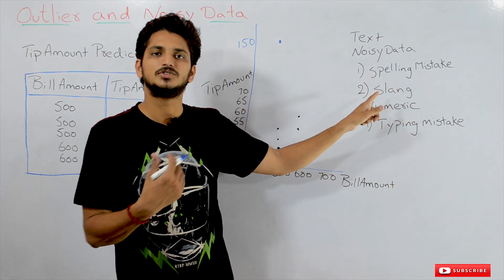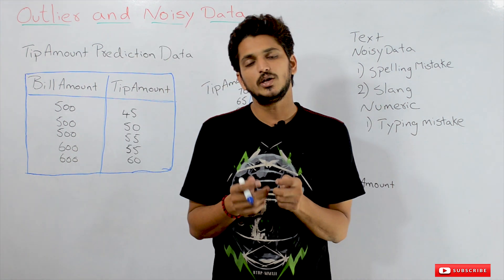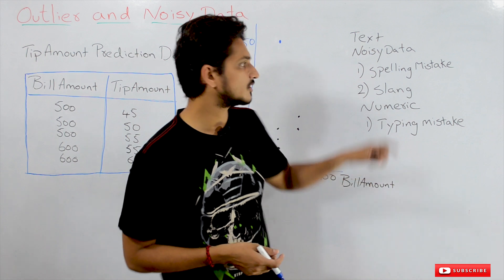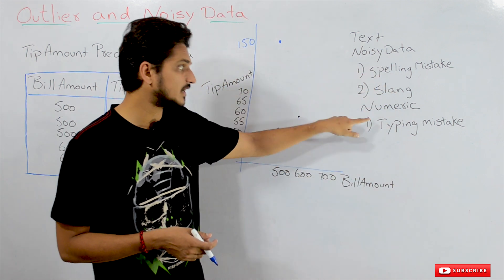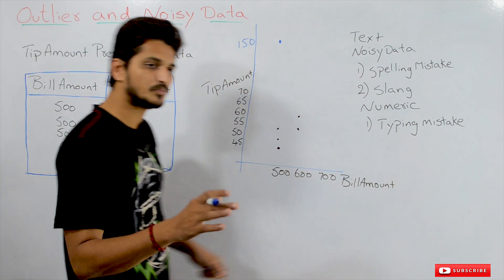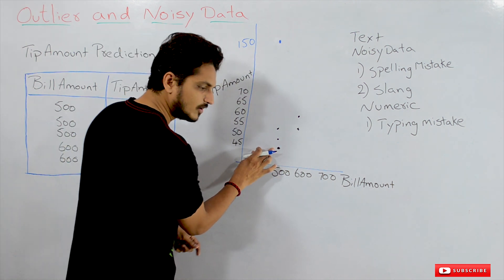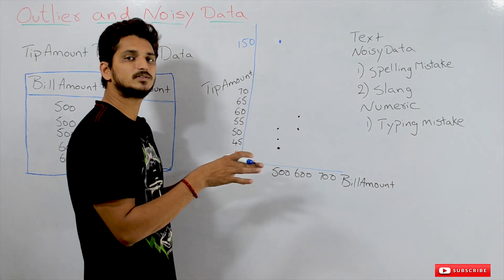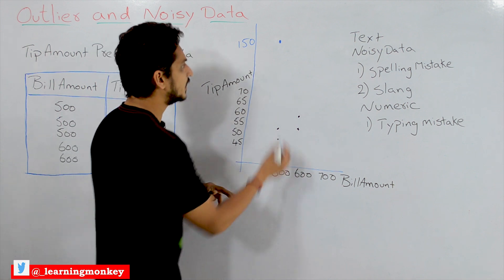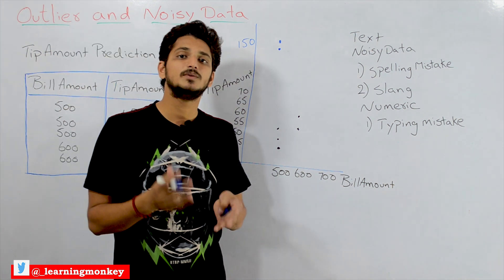We don't find those words in the dictionary. Nowadays it is very common for all of us to send text messages and use shortcuts. All this comes under noisy data in text data. Coming to numerical data, what is noisy data? Here it is typing mistakes. For example, suppose a customer made a bill amount of 500 and gave a tip amount of 45, but by mistake someone typed it as 145. That point appears far from the rest — these types of points we call noisy points.